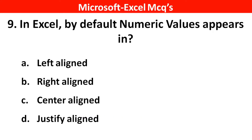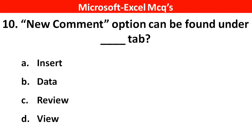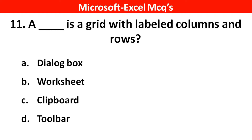Next question: in Excel, by default numeric values appear in? Right answer is option B, right aligned. Next question: new comments options can be found under which tab? Right answer is option C, Review. Next question: a worksheet is a grid with labeled columns and rows. Right answer is option B, worksheet.